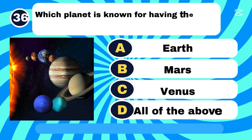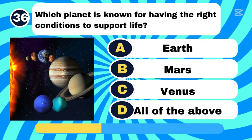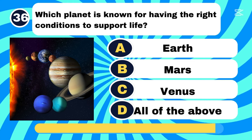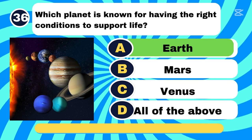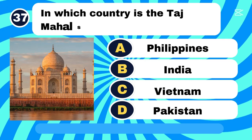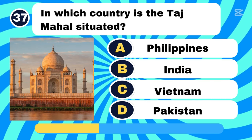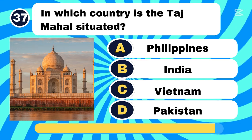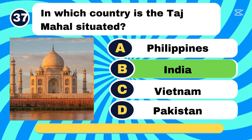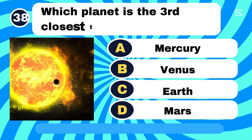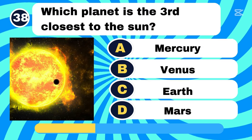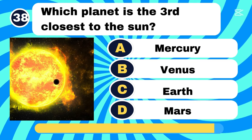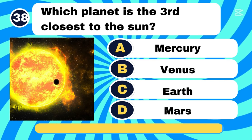Which planet is known for having the right conditions to support life? Letter A, Earth. Which planet is the third closest to the sun? Letter C, Earth.